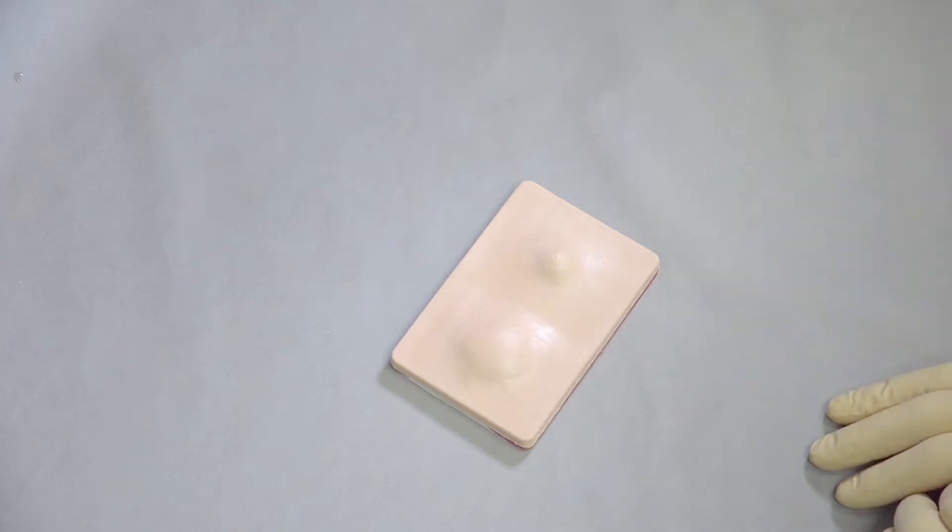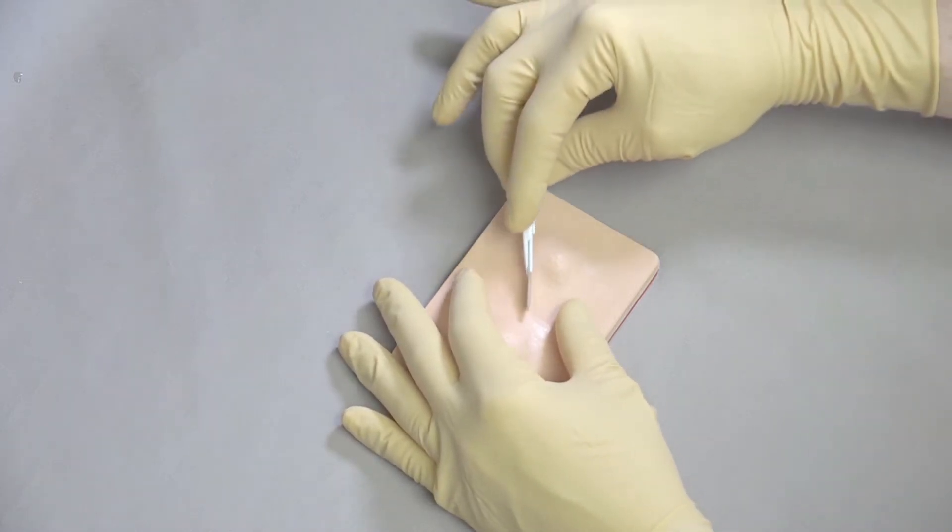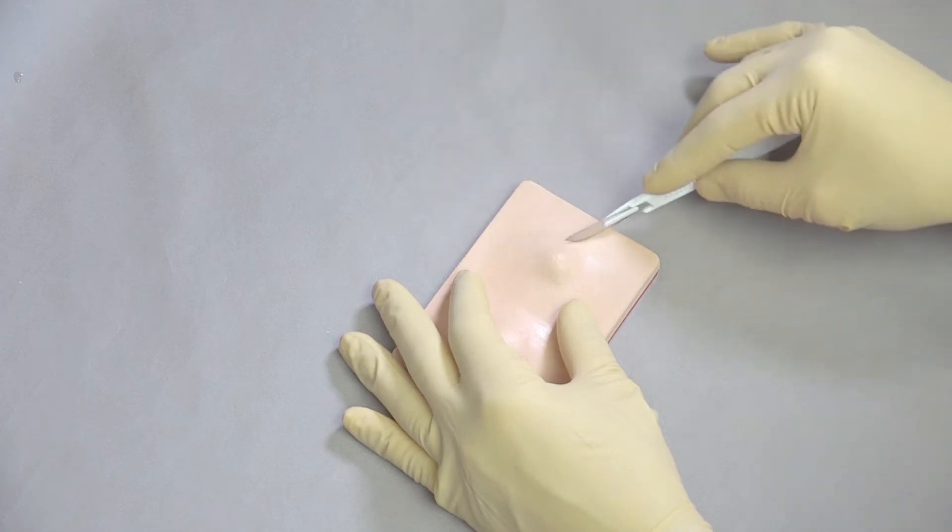We're going to start working on the cyst in this case and you can remove the cyst any way that you think is best. In this case we're going to use the scalpel blade. You can also use the scissors. My preference is to go right over the top of the cyst although you can if you're not sure make an elliptical incision around the cyst.